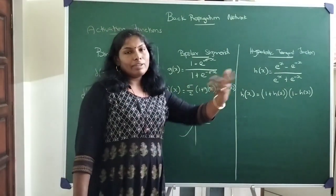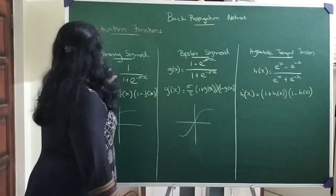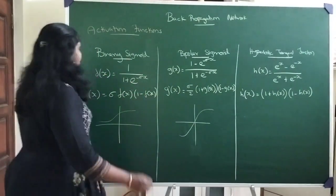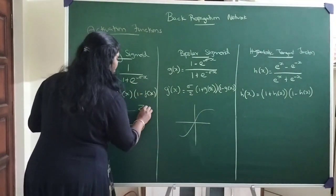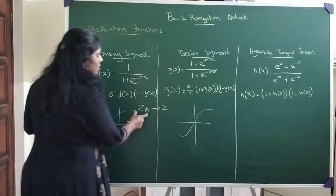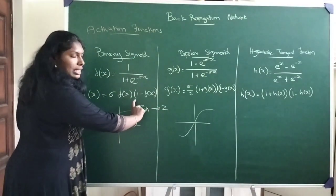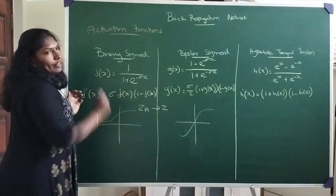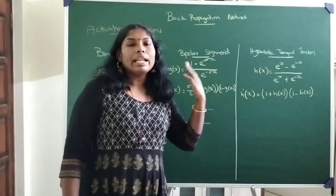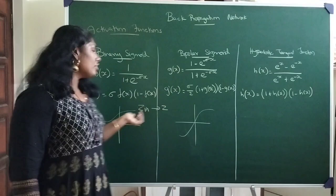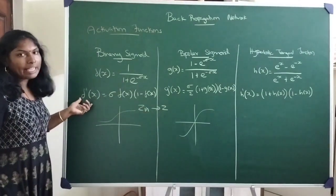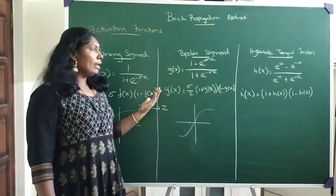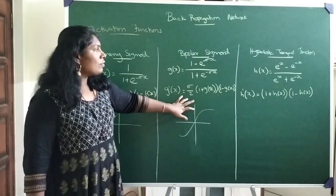For the binary sigmoidal activation function, f(x) is used to convert z_in to z. The z_in function is the input received from all the input neurons, which is then calculated to z using the activation function f(x). When calculating the error function, we use the derivative f'(x) — the reverse function — for the error between the output layer and the hidden layer, and between the hidden layer and the input neuron. Similarly, for bipolar sigmoidal and hyperbolic tangent functions, corresponding formulas apply.